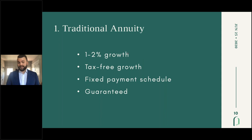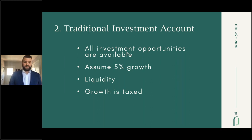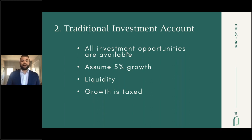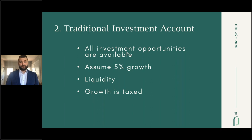A traditional investment account has all your investment opportunities available — you can invest in just about anything you'd like. Typically you're going to see between 7% and 8% growth, but for my modeling I like to use 5% because we model conservatively. I love getting calls from clients when they're so excited that their accounts are way bigger than they expected. A traditional investment account also has a high degree of liquidity — you can typically have the funds within your own checking account within 24 to 48 hours. But the growth is taxed.